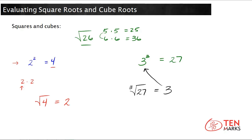The same thing goes for cubes. You can't take the cube root and get a whole number from something that's not a perfect cube. For example, if I ask you to find the cube root of 7, the closest you can come is 2 times 2 times 2 equals 8, and below that is 1 times 1 times 1 equals 1. So the cube root will fall somewhere between 1 and 2, and again it'll be an irrational non-terminating decimal.